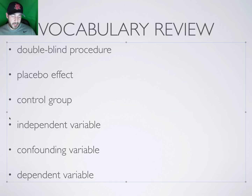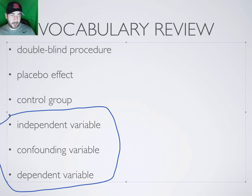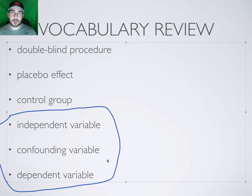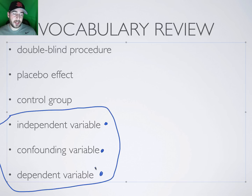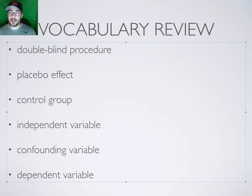Independent, confounding, and dependent variables will be covered in a separate video, because these are confusing for many people and extremely important for the FRQs on the AP exam and for AP Psychology in general. Look for that separate video on those three variable types. That's it for today — we'll see y'all later.